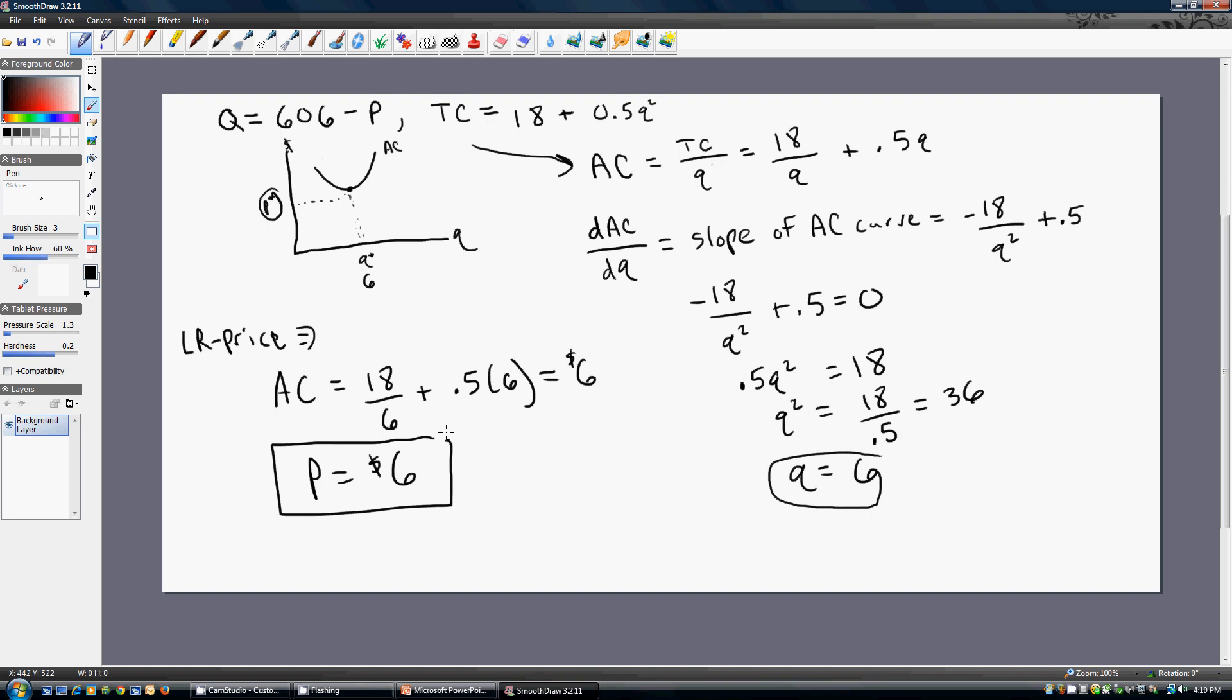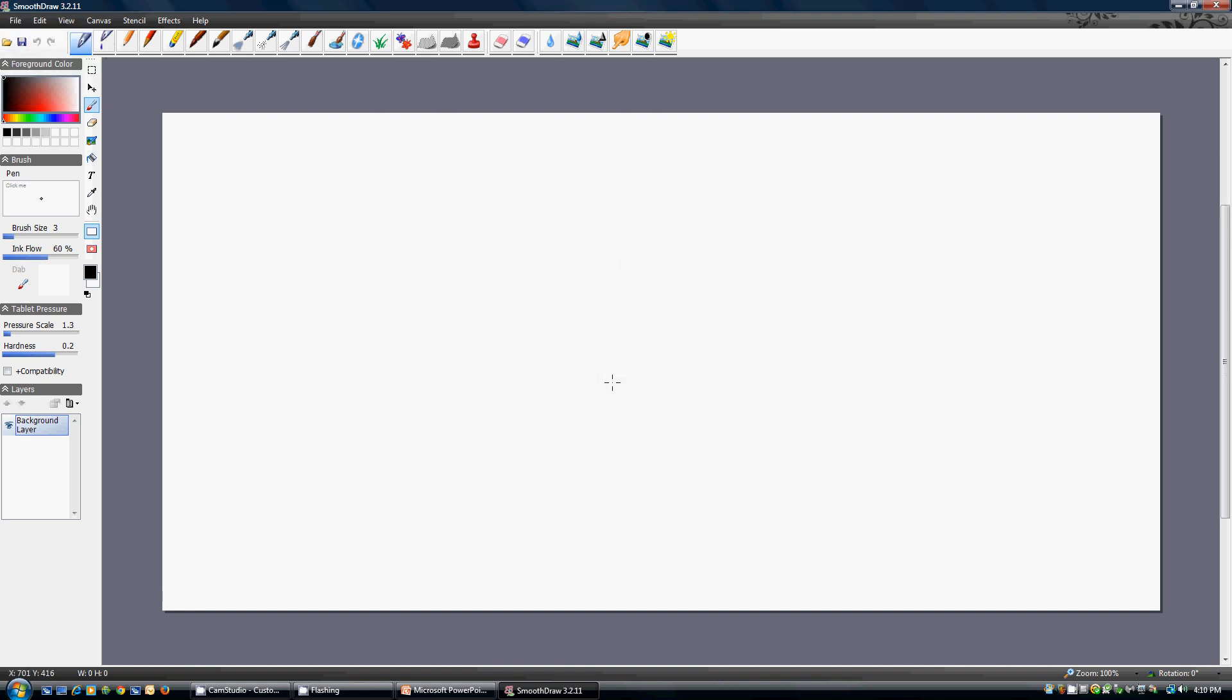What else do we need? Let's find out how many units consumers buy in this market. Given the market demand curve Q = 606 - P, and since P = $6, we see that consumers buy 600 units of output.